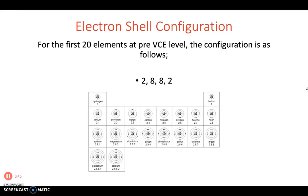The electrons configure themselves in a very particular way which I want you to note down. For the first 20 elements at pre-VCE level, year 11, year 12, the configuration is as follows: the electrons inside of the atoms like to arrange themselves as 2-8-8-2 configuration for the first 20 elements. That's as far as we go before the senior levels.